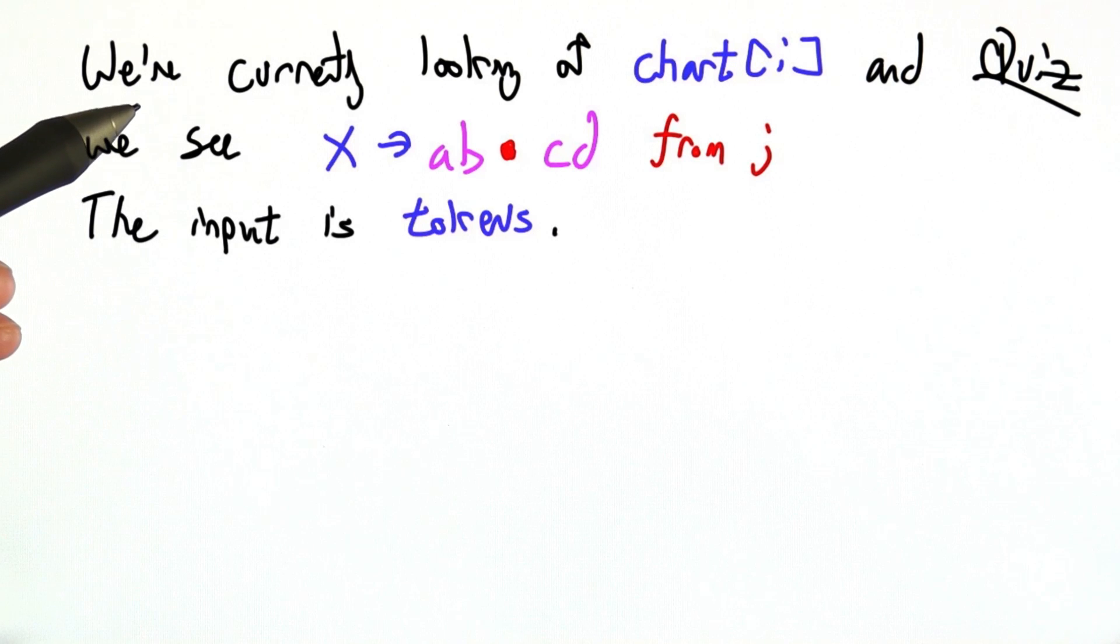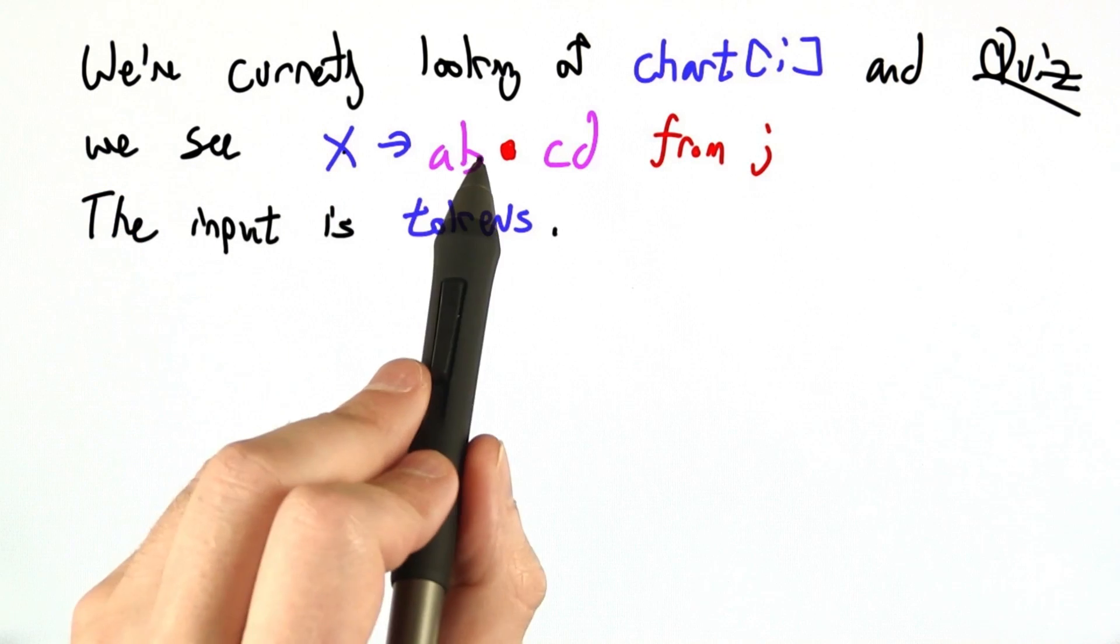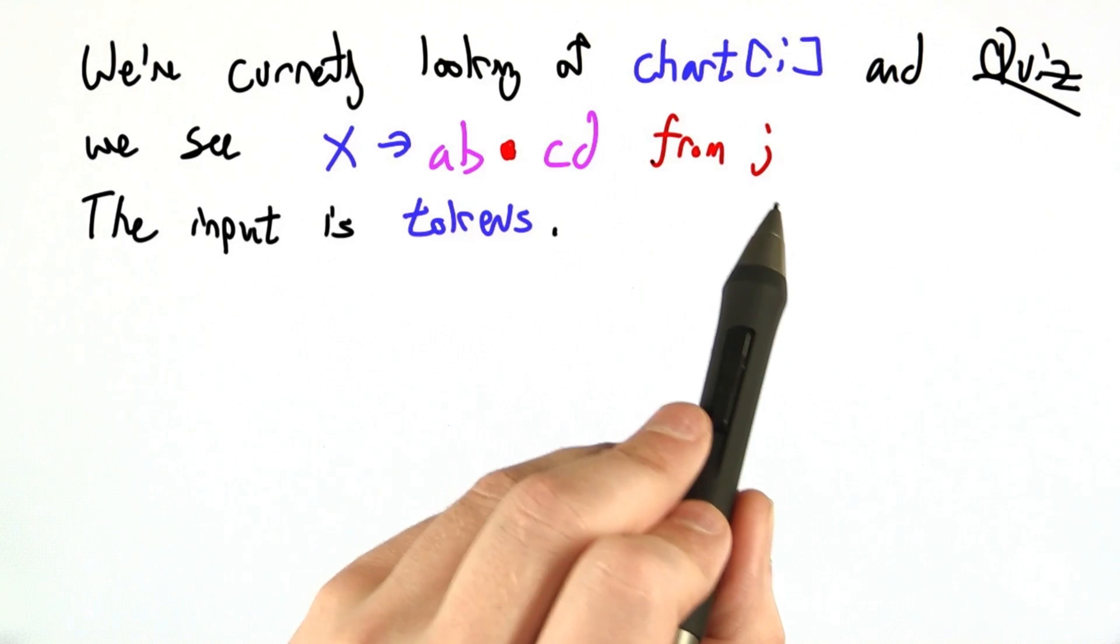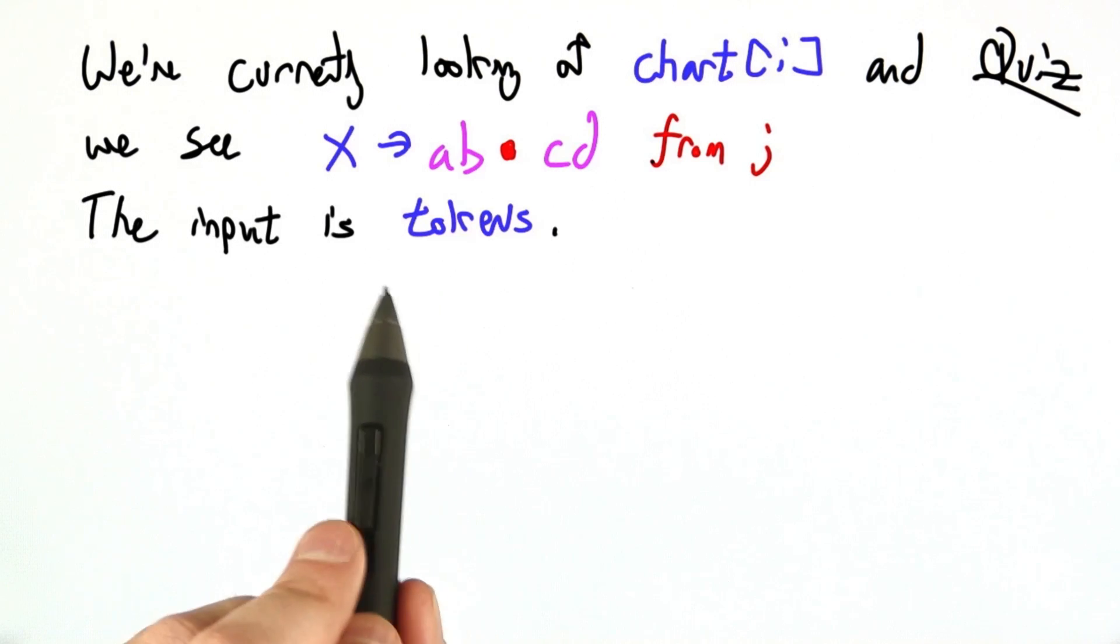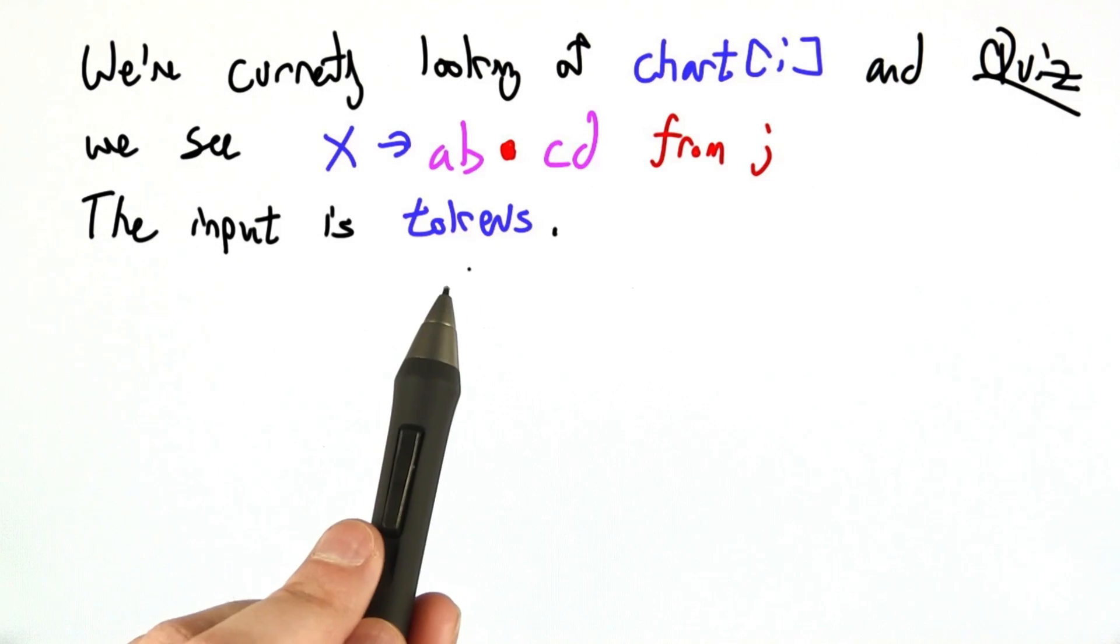Let's say we're currently looking at chart sub i, and there's a state in there, x goes to ab.cd from j. And this time we're going to look at the input tokens, and they're in a list called just tokens.